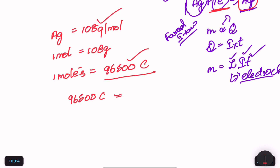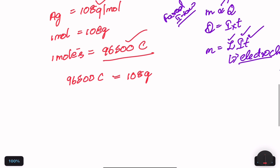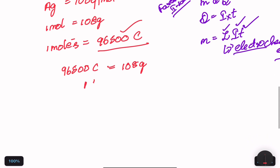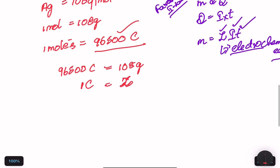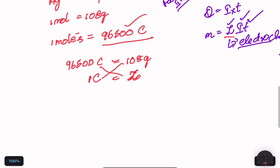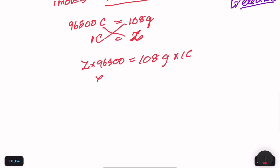When 96,500 Coulombs are passed, 108 grams are deposited. So for 1 Coulomb, the mass deposited is x. Cross multiplying: z × 96,500 = 108 grams × 1 Coulomb. Therefore z equals 108 grams divided by 96,500 Coulombs.